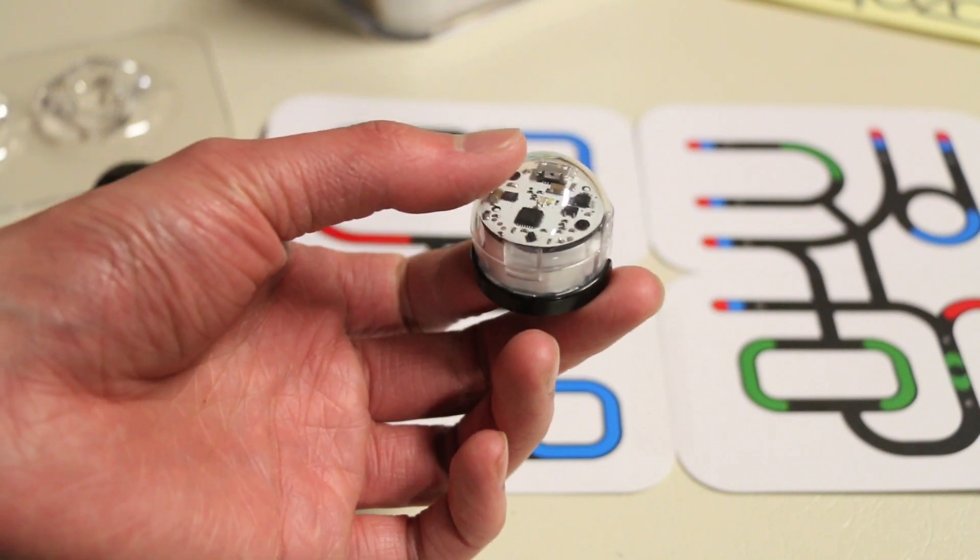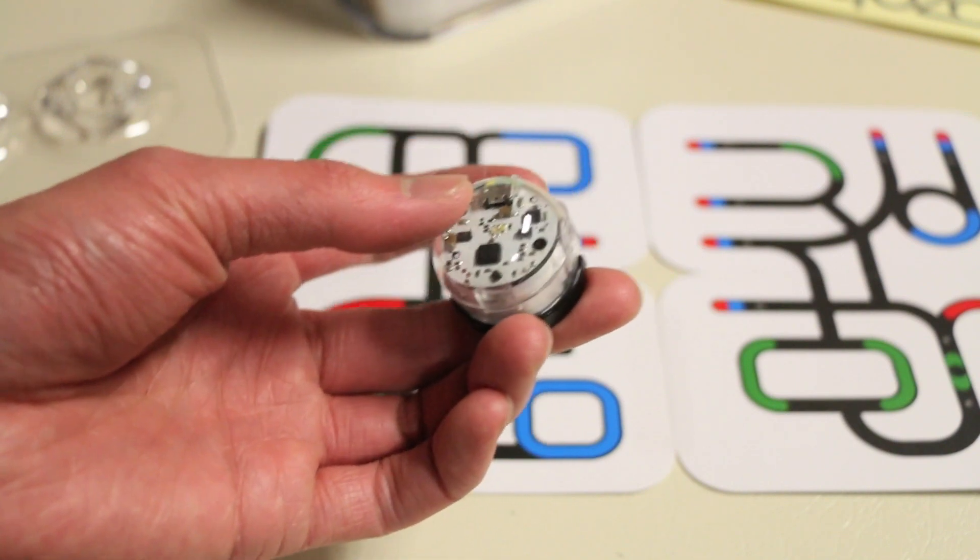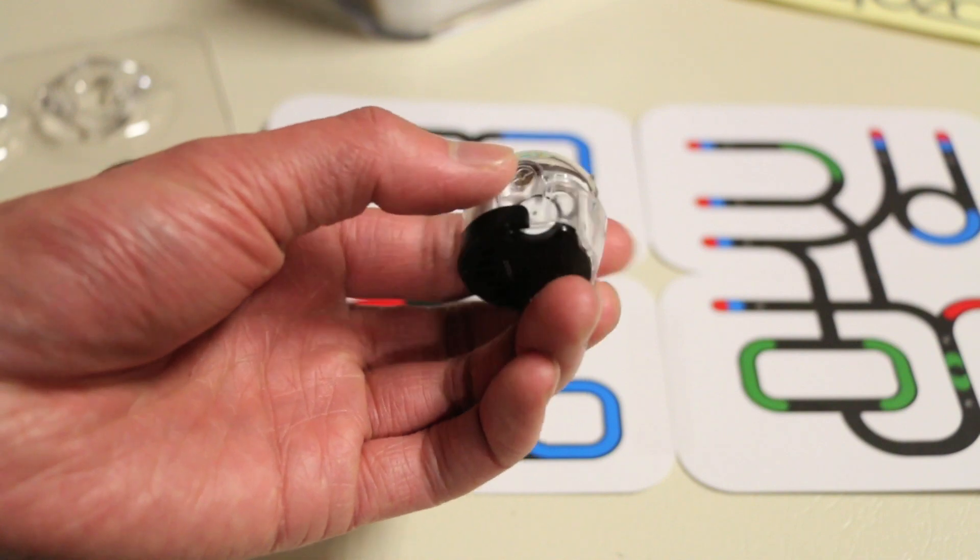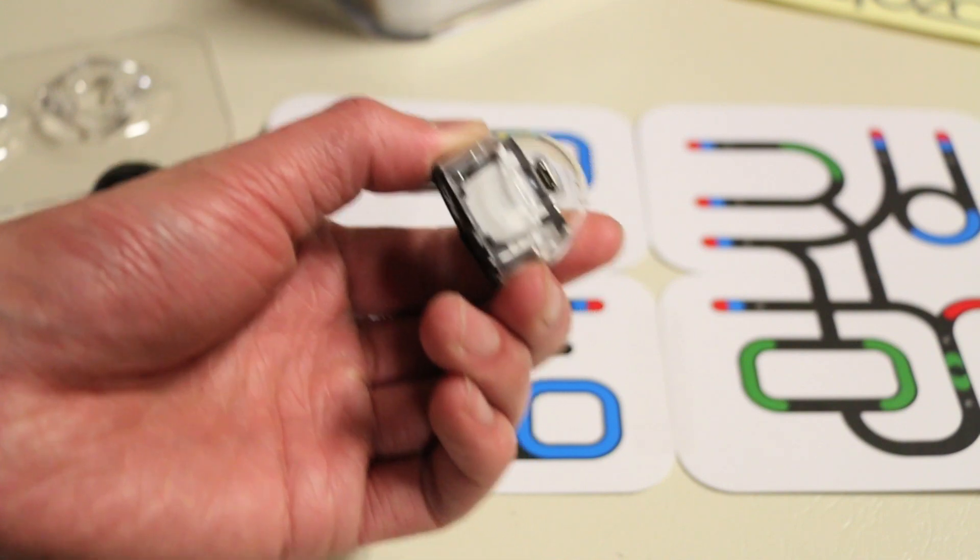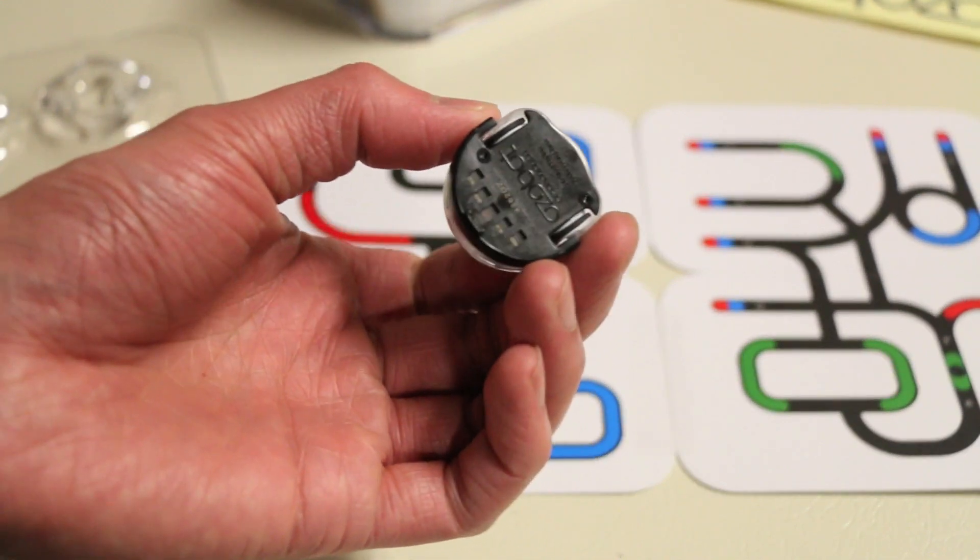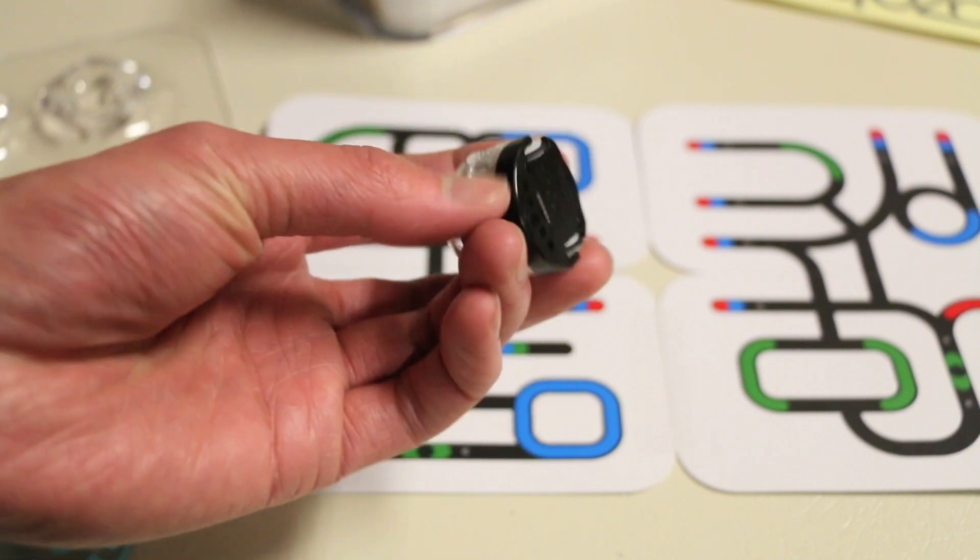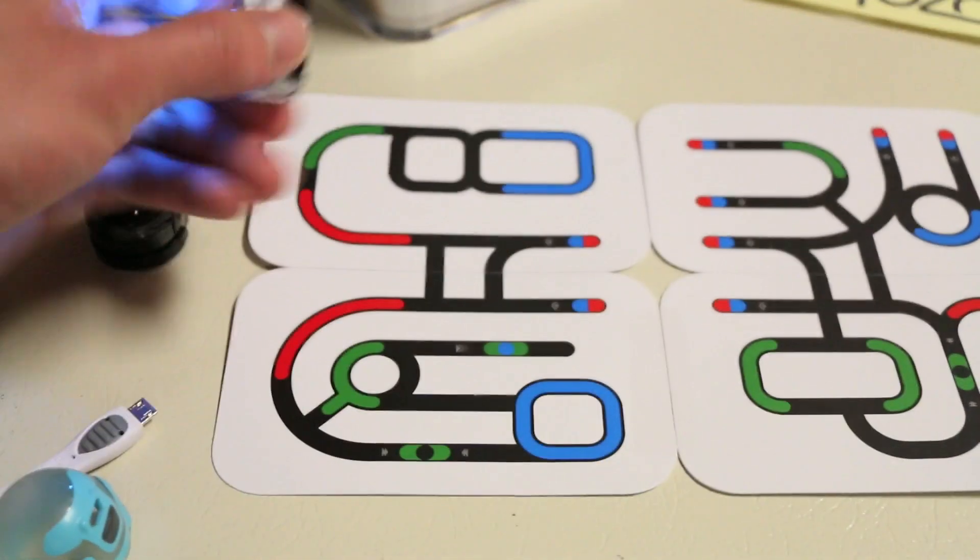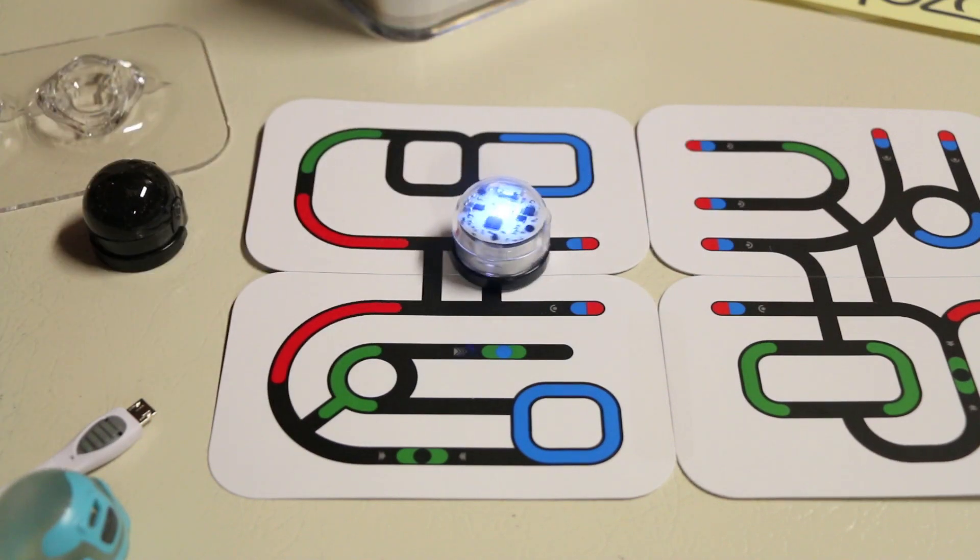So rather than telling you guys about how it works, how about we just demonstrate it. So there is an on and off button on the side here, there's also a micro USB port to charge the Ozobots themselves and a lot of wheels on the bottom here and of course the sensors. So we'll hit the on button, place it down and off we go.